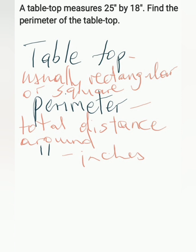Then jot down, perimeter means total distance around. I would write down the meaning for the symbol and write that it's inches. This will guide my understanding throughout this process. I also made a notation of the fact that tabletops are usually rectangular or square. Based on the fact that they're giving me two dimensions, one seems to be length, one seems to be width.